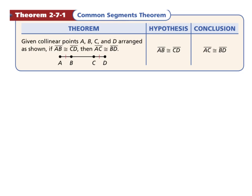The common segments theorem says: if we are given points A, B, C, and D arranged as shown, and segment AB is congruent to segment CD, then AC has to be congruent to BD. Since BC is congruent to itself through reflexive property and AB is congruent to CD, then AC must be congruent to BD — because if you add the same piece to two congruent segments, they remain congruent.